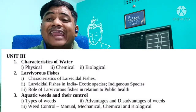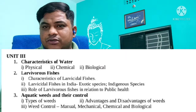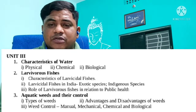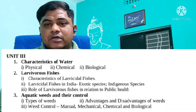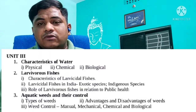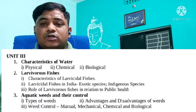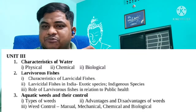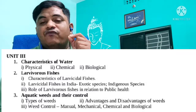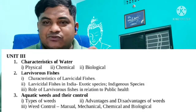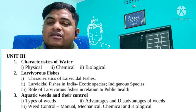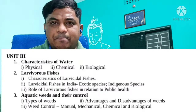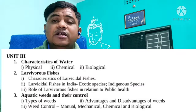Unit Three starts with the characteristics of water. We need to know the physical, chemical, and biological parameters of water, which are very important for fish culture. Before planning fish culture, we must check all water quality parameters. We analyze physical, chemical, and biological parameters to assess water quality prior to fish culture.